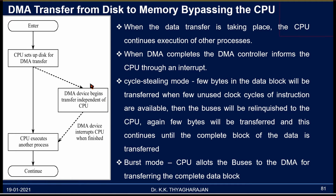When DMA is taking place, the CPU sets up the disk for DMA transfer. Then the DMA controller begins transfer independent from the CPU. When the DMA is completed, the DMA controller informs the CPU through an interrupt. There are several modes for transferring data using a DMA controller. One method is called cycle stealing.